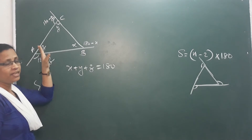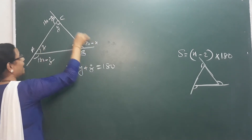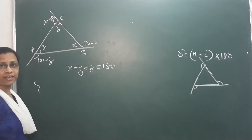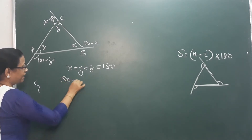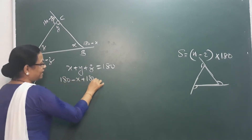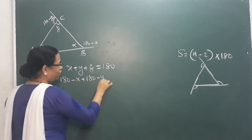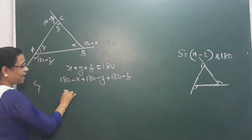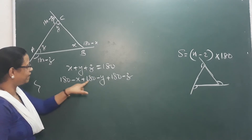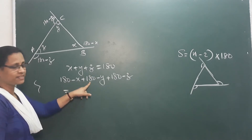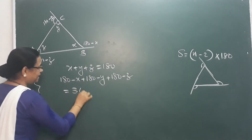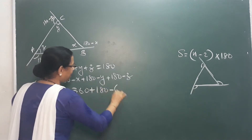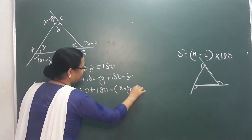The angle sum of a triangle is 180. Now, how do we find the outer angle sum? The sum of the outer angles is: (180 minus x) plus (180 minus y) plus (180 minus z). That gives us 3 times 180, which is 540, minus (x plus y plus z). Then 360 plus 180 minus (x plus y plus z).